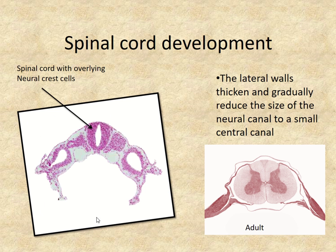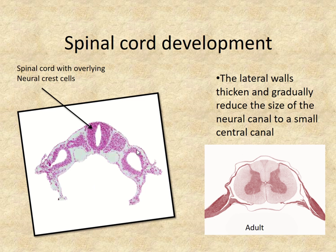This is an actual section of an embryo from LSU's virtual embryo database that they have online. You can see the developing neural tube that will become the spinal cord, where the overlying neural crest cells are located. Here is paraxial mesoderm that is developing, and here we have lateral mesoderm, which is already divided. There's overlying ectoderm and underlying endoderm. This is a transverse view, and you can see the somatopleura and splancnopleura that are developing.